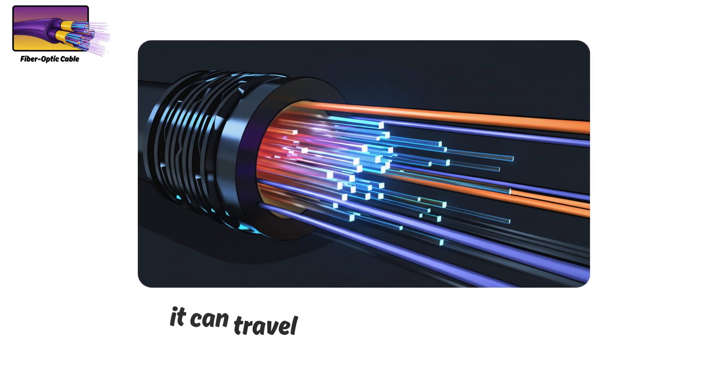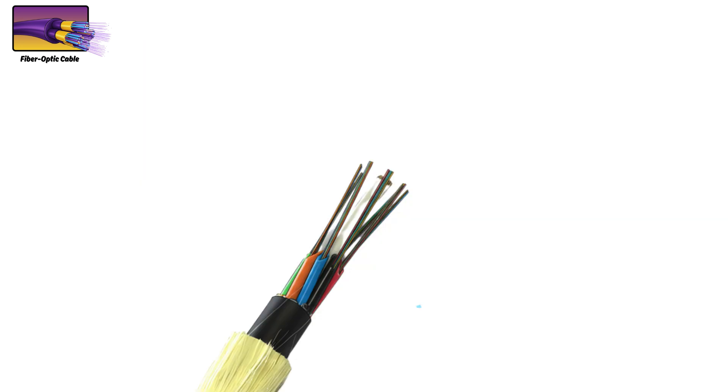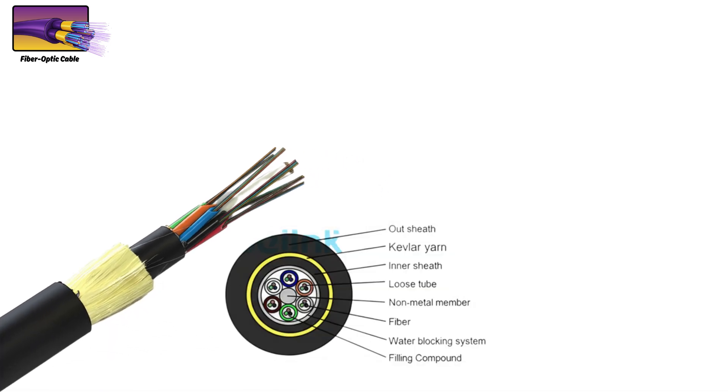Because the signal is light, it can travel over very long distances without losing speed or quality, and it's immune to electrical interference. To prevent damage, the core is coated and reinforced with flexible strength members like Kevlar, then wrapped in protective jackets depending on where it will be installed.